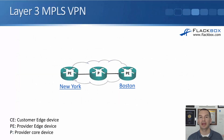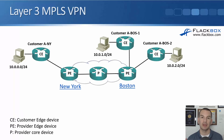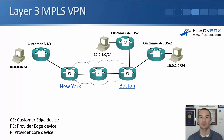Looking at our MPLS VPNs — in the diagram here we've got the service provider MPLS network. In real world there's going to be more than three routers. The terminology: a PE is a provider edge router which connects to a CE, which is a customer edge router. The routers in the middle going across the provider's core are P routers — provider core routers. In the diagram, Customer A has an office in New York on subnet 10.0.0.0/26, a site in Boston on 10.0.1.0/24, and a second site in Boston on 10.0.2.0/24.